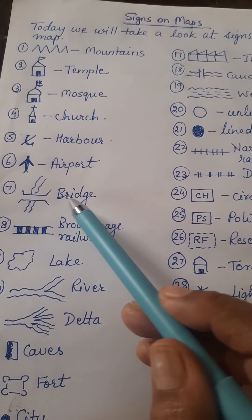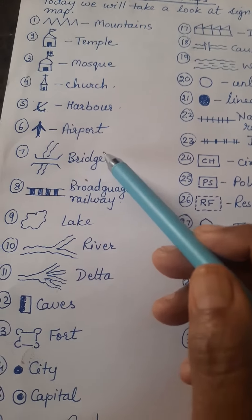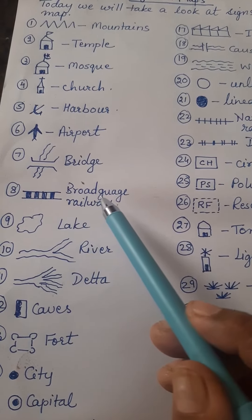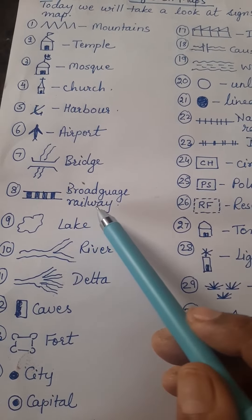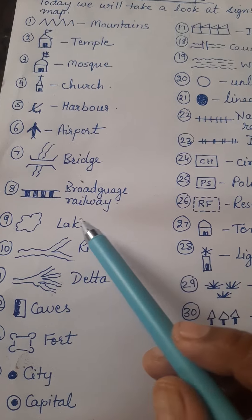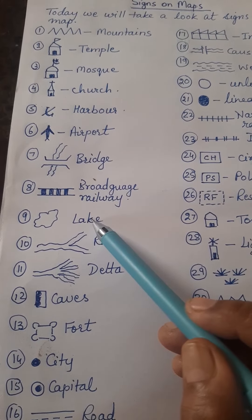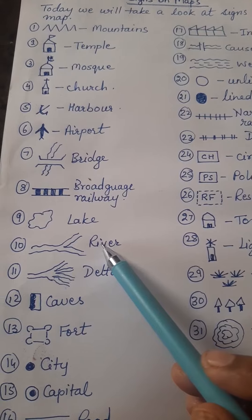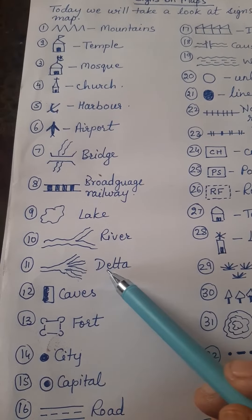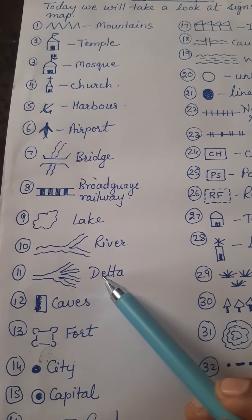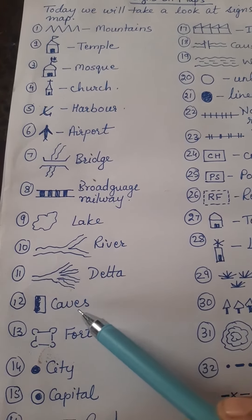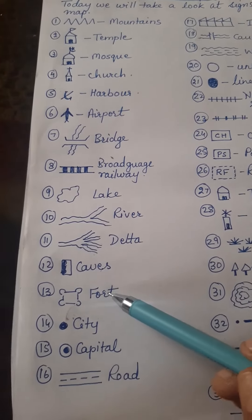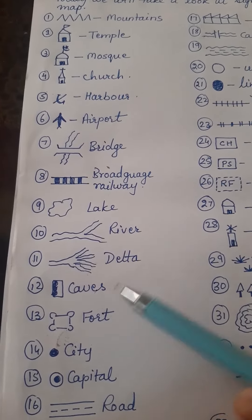This sign is used to show a bridge on the river. This is a broad gauge railway line sign. This is for lake. This shows a river. This sign is to show the delta. This sign shows the caves.